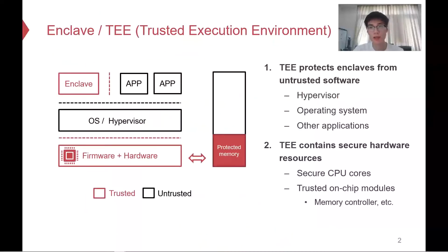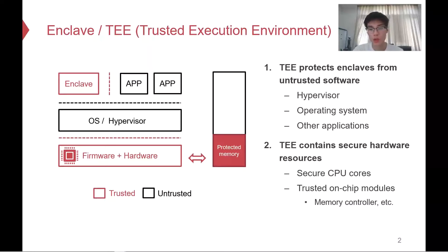TEE or enclave is a hot topic in recent years. TEE can protect a range of trusted code and data in an enclave from other untrusted software, including the kernel, hypervisor, or other user applications and enclaves. To achieve it, TEE contains several secure hardware resources, such as secure CPU cores, trusted memory controllers, or other on-die security modules. With this security hardware, TEE can also protect off-chip storage and provide secure memory for enclaves.